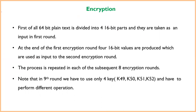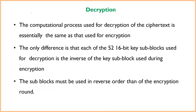In the encryption process, the 64-bit plaintext is first divided into four 16-bit parts and taken as input to the first round. Each encryption round produces four 16-bit output values used as input to the next round. This repeats across all eight rounds. For decryption, the same process applies, except each 16-bit key block used is the inverse of the corresponding encryption key, applied in reverse order.